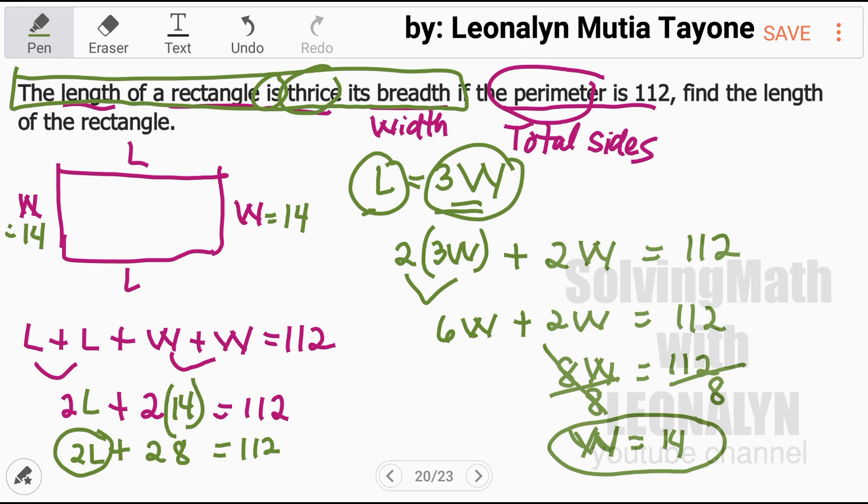So we have 2L plus 28 equals 112. To isolate 2L, to get the value of L, this 28, since it's adding, it subtracts on the other side. Now, 112 minus 28, that is 84.